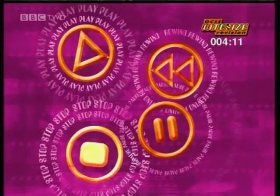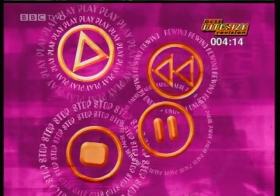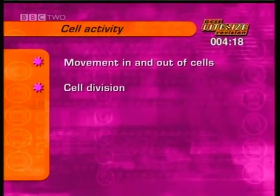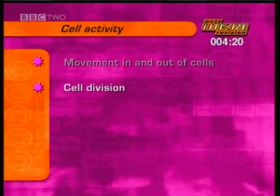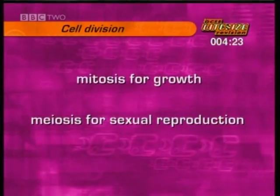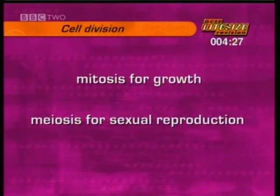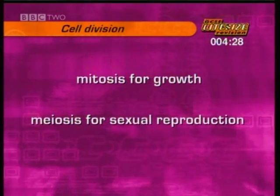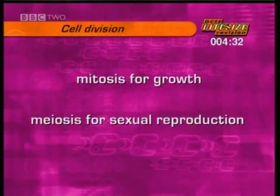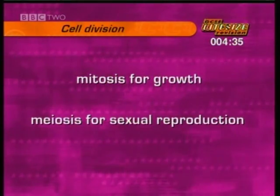That's it for transport in and out of cells. This section is about cell division. All cells divide by mitosis for growth, while sex cells divide by meiosis. For the higher tier paper, you need to know a bit more about these two kinds of cell division. First, mitosis.